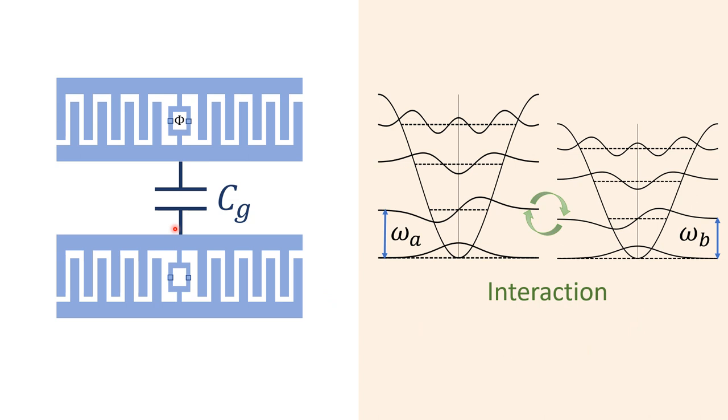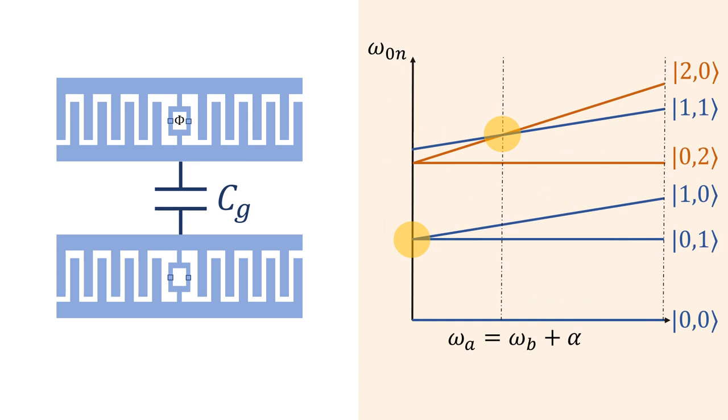For a quantum computer, we need two-qubit gates. These two-qubit gates can be supported by the capacitive interaction between nearby qubits, as in this picture. The capacitive interaction allows the exchange of excitations between the transmons, provided that the frequencies are close enough.